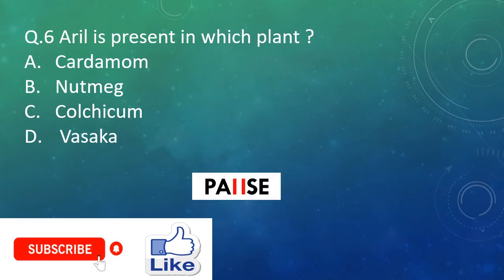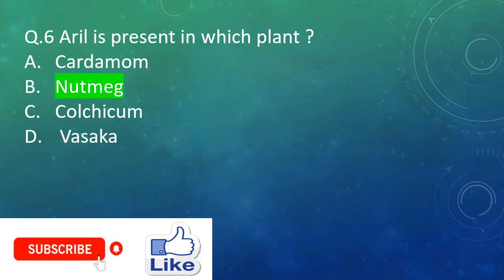Question six: Arille is present in which plant? Option A: Cardamom. Option B: Nutmeg. Option C: Colchicum. Option D: Vasaka. And the right answer is Option B: Nutmeg. So arille is present in nutmeg.